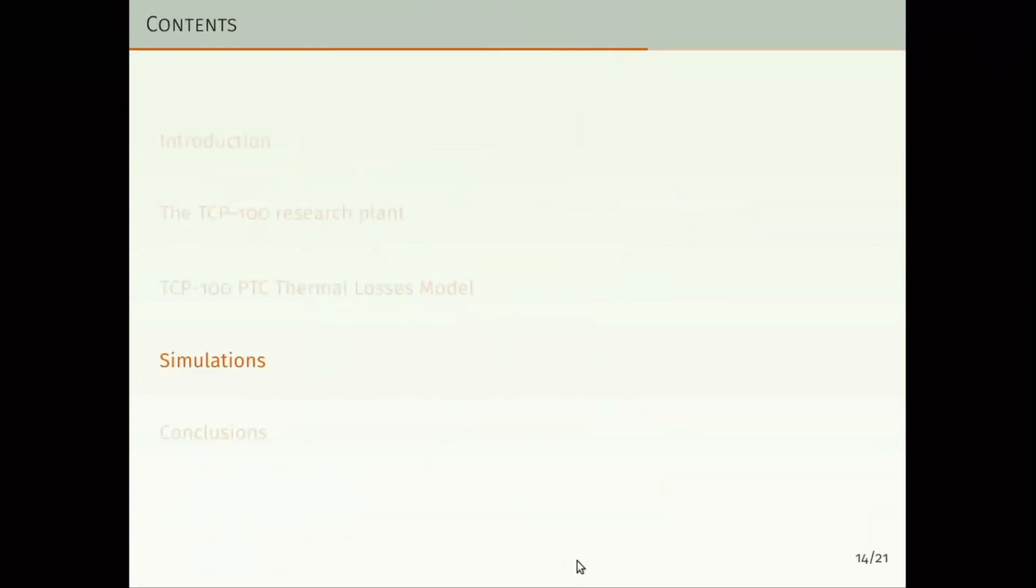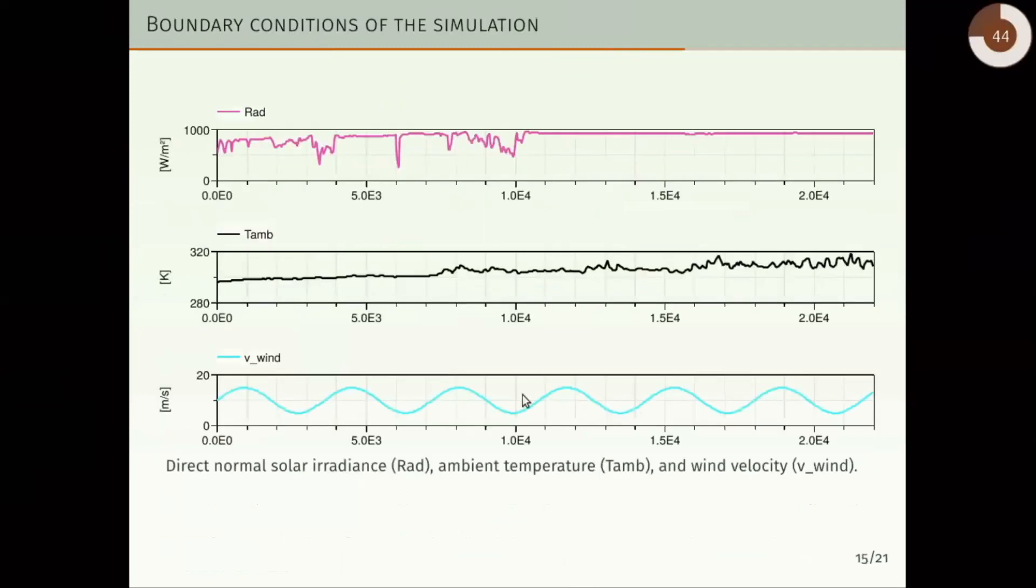In this section now, we are going to present some simulations. In both simulations, we are using the same boundary conditions. These boundary conditions are formed by solar irradiance, ambient temperature, and wind velocity. The former two are obtained from experimental data from Plataforma Solar de Almería. The third one has been generated by a sine wave with a mean value of 10 meters per second.